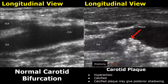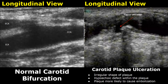Here is another image of a plaque in the internal carotid artery. It is a calcified plaque that is hyperechoic and also has posterior acoustic shadowing. Carotid plaque ulceration is difficult to see on ultrasound, but in some cases, if it is prominent, it can be seen. Its features include irregular shape of the plaque and hypoechoic defects within the plaque. This type of plaque is more likely to cause embolization.